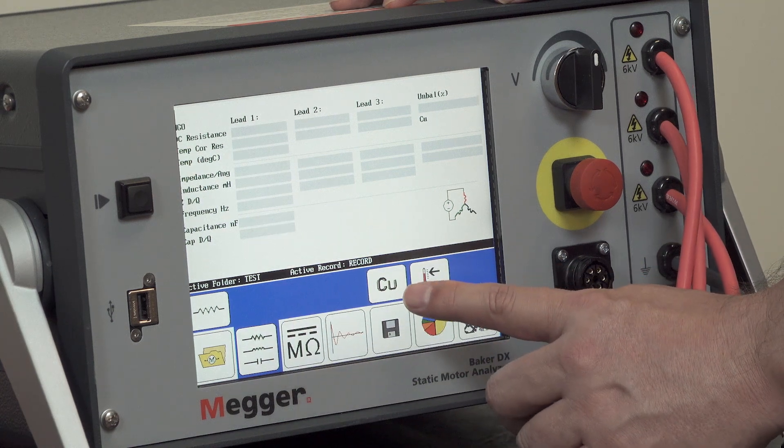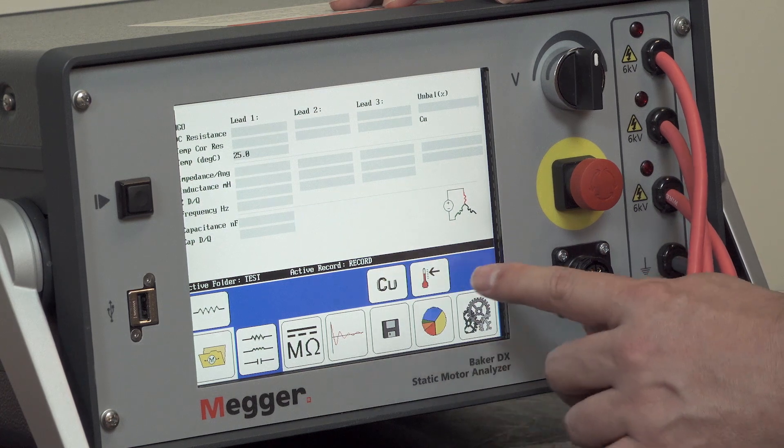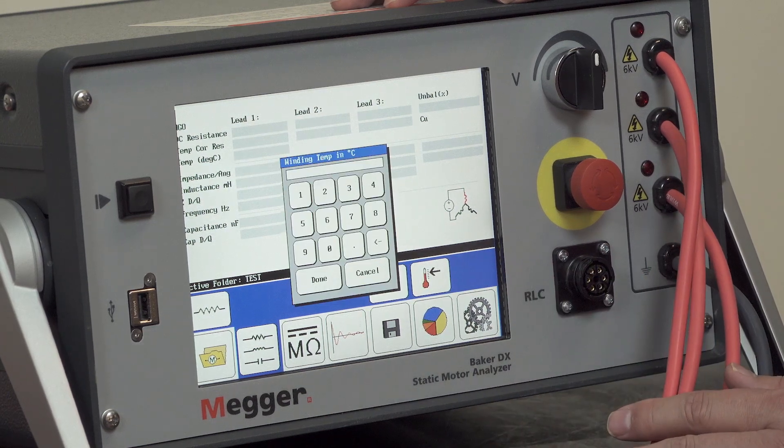We also have options for selecting the type of conductor being tested, whether copper or aluminum, and for entering temperature for temperature compensation.